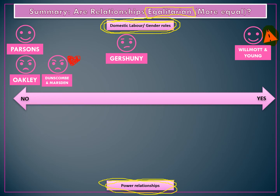In the middle, we have Gershuny, who recognises the change occurring in families. He talks about a process called lagged adaptation: as women enter the world of work and increase the time they spend in paid employment, they have less time for housework. What happens is that men start to pick up more housework as women do more paid work, but it takes men a while to catch up. So there is a lag between women doing more paid work and men picking up more domestic work — it shows change without fitting heavily on either side of the debate.